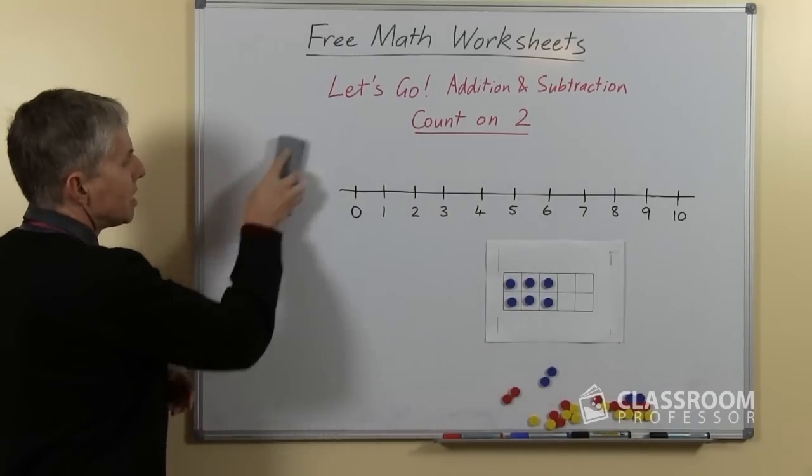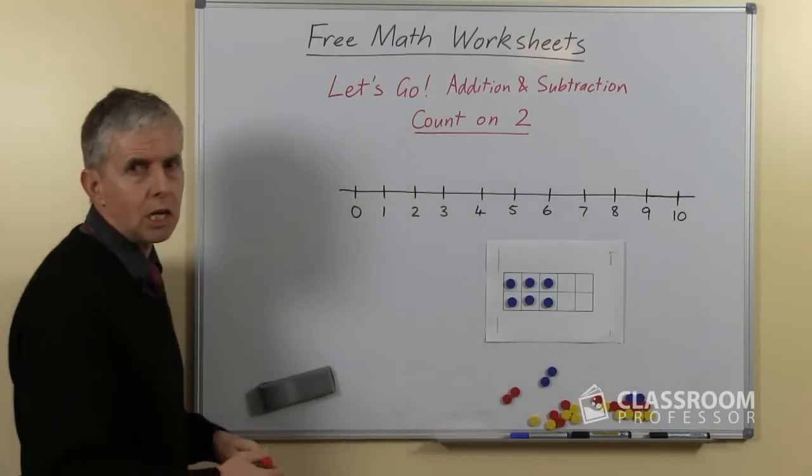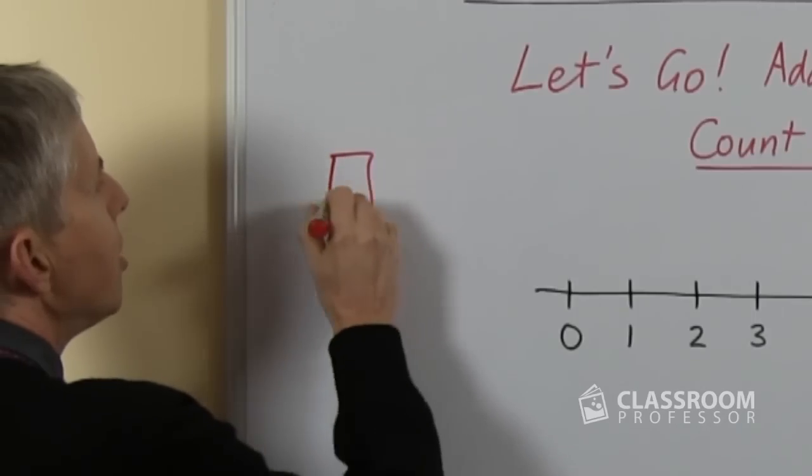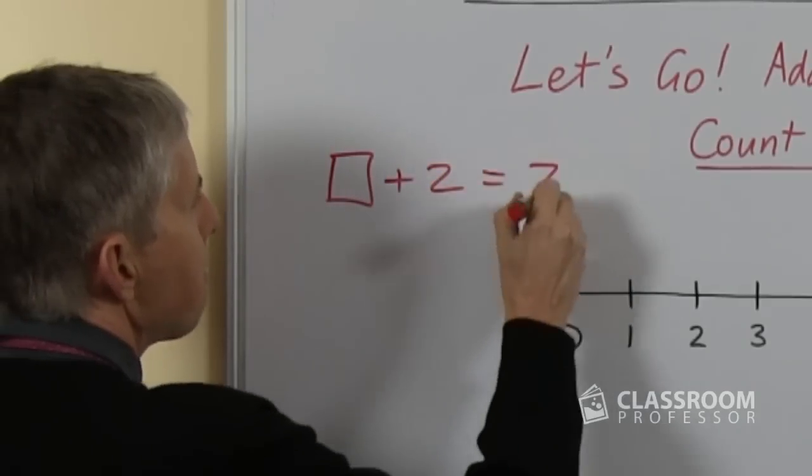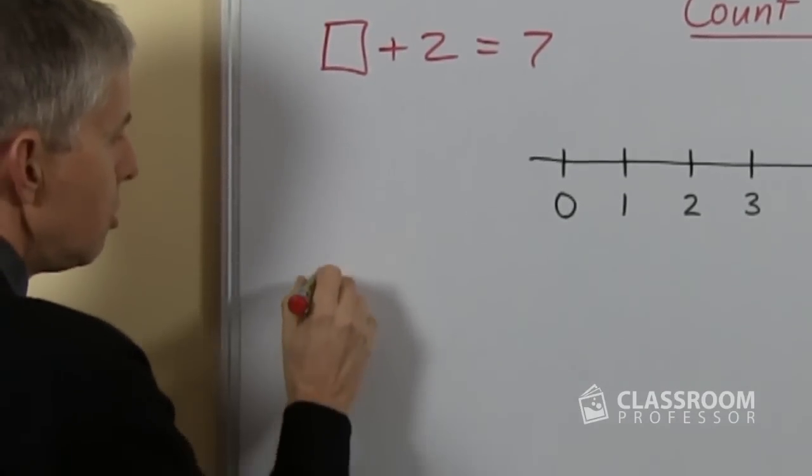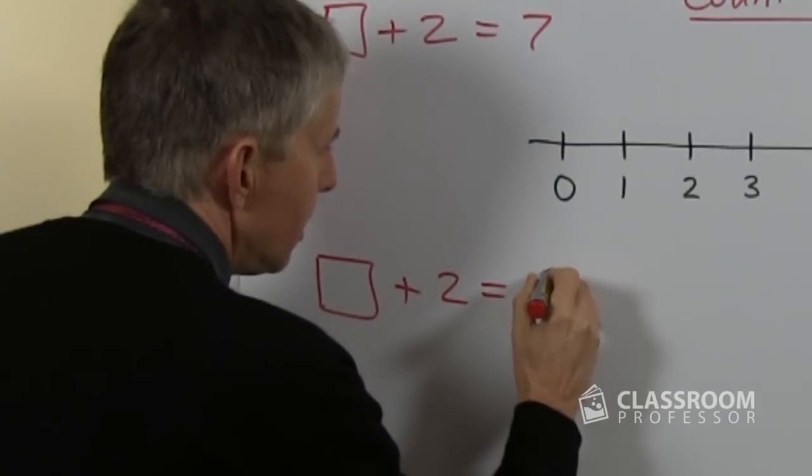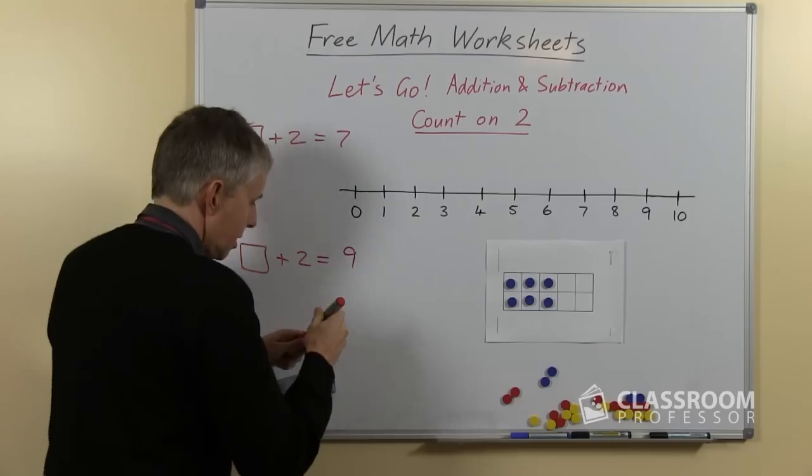Alright, so those are some easy questions, let's try some slightly harder ones. This is a question where we don't know one of the numbers and I'm going to do 2 different questions here like this. What shall I have for this one? Let me have 9, ok.